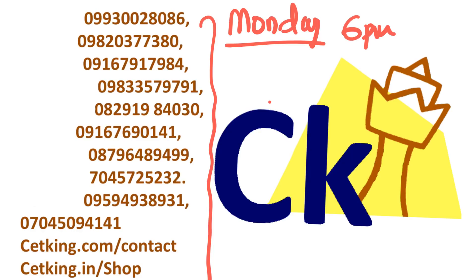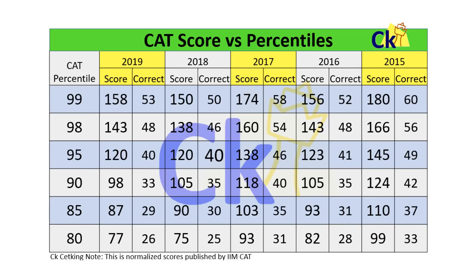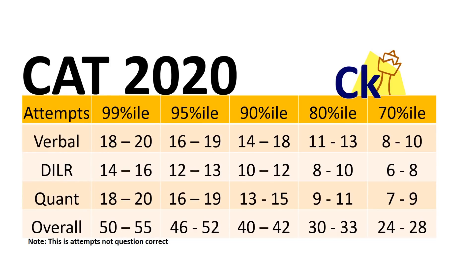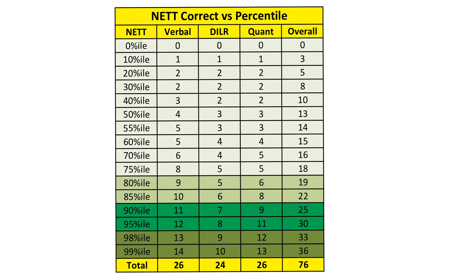This is the analysis of the last five years — 2019, 2018, 2017, 2016, and 2015. You can pause the video and check it out. These are my recommended attempts, considering 80% accuracy for CAT 2020. I've already made a separate video for that. Now coming to the main topic — your score net correct versus percentile.